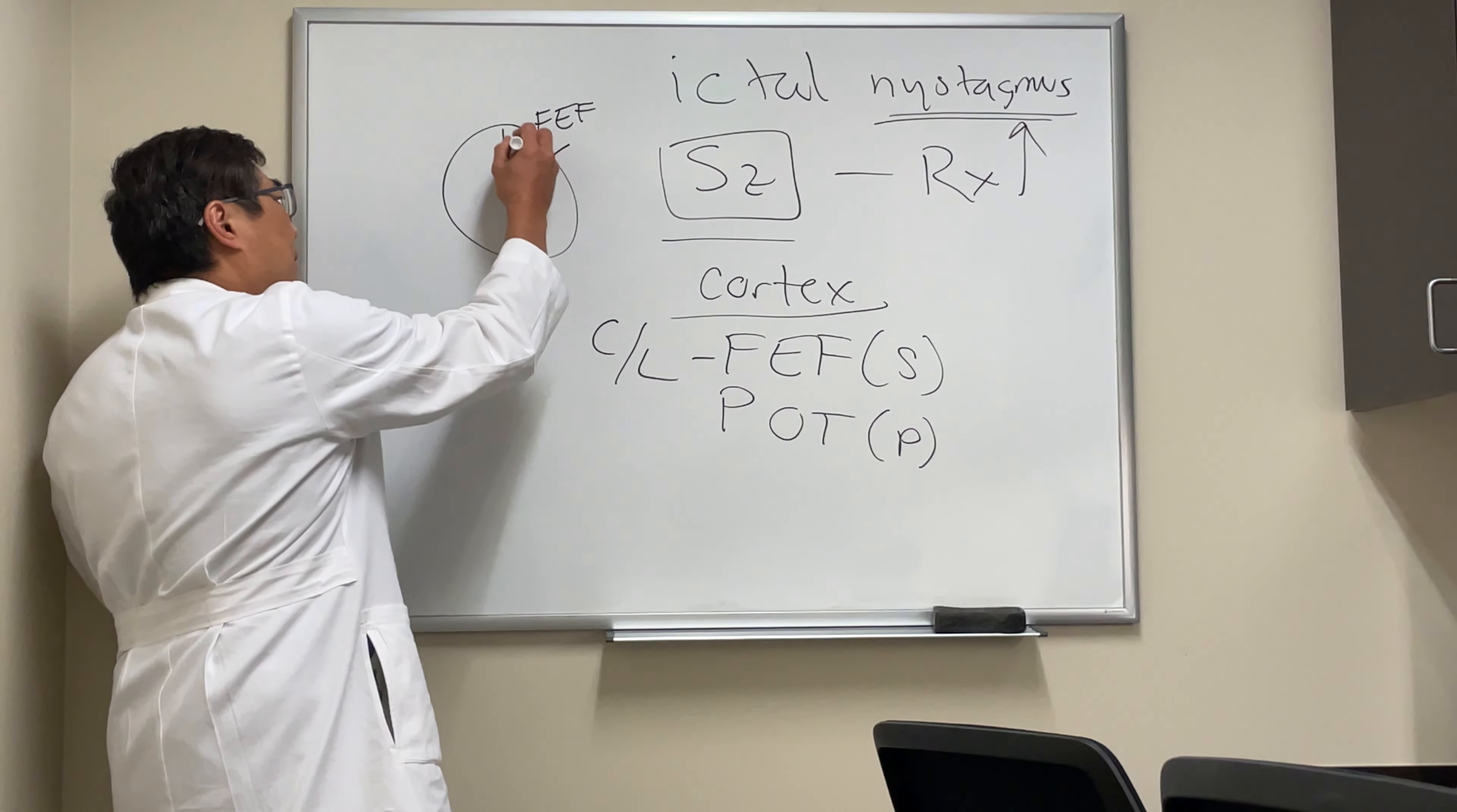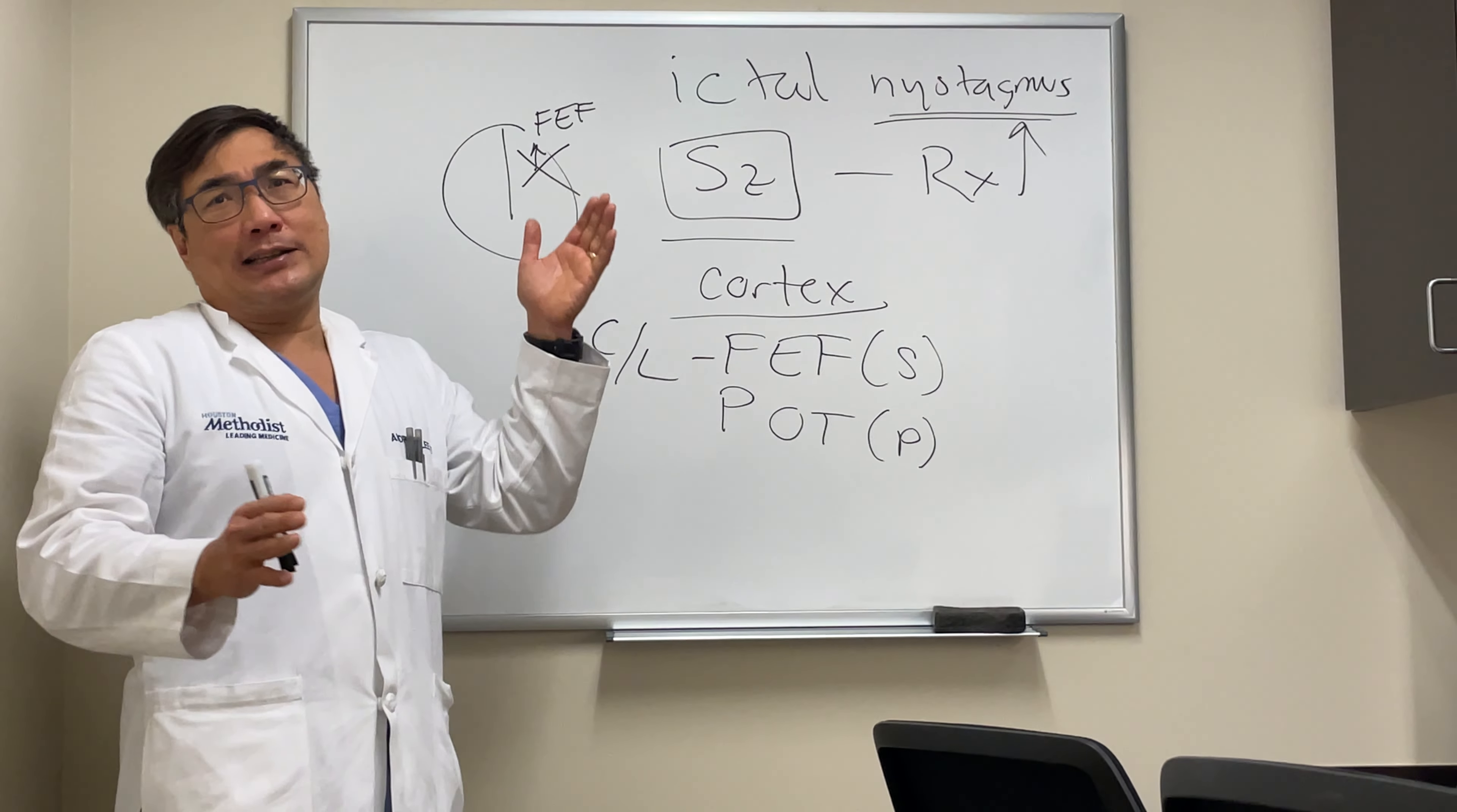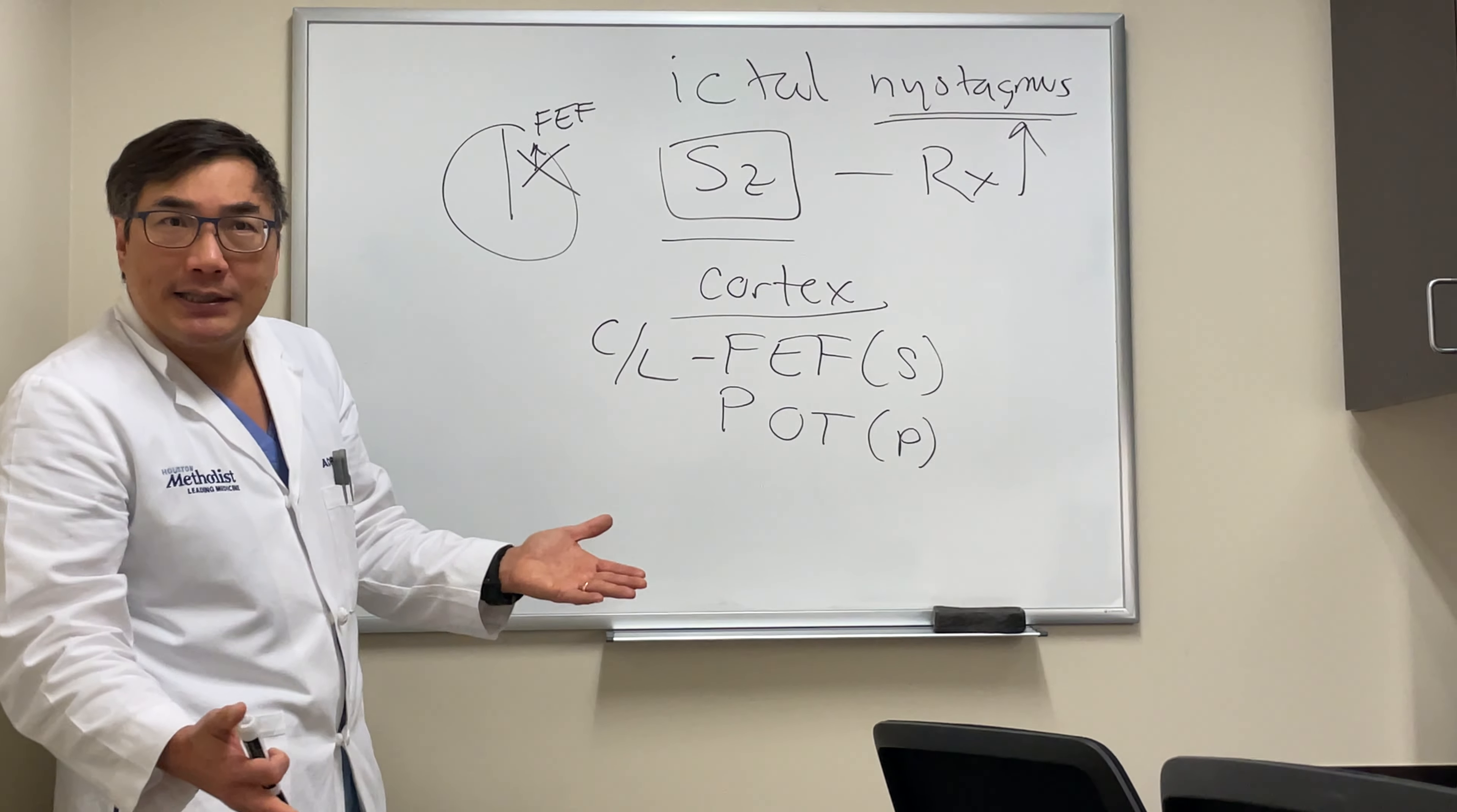If it's a destructive lesion, then you can't look to the right, then your eyes will be driven to the left. So a destructive lesion in the left frontal lobe will not be able to direct the saccade to the right. And therefore the right temporal lobe will be directing the eyes to the left. So destructive lesions and irritative lesions in the frontal eye field do the opposite.